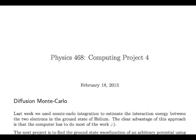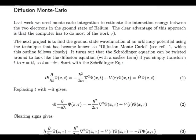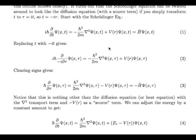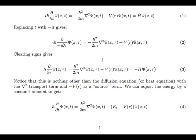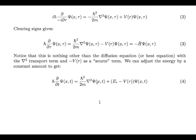Okay, so this is Computing Project 4, and it's about diffusion Monte Carlo. And you'll recognize these equations. These are right out of the slides, the Schrödinger equation, what you get when you replace the time with the complex time, what happens when you clear some signs, and finally, what you end up with.